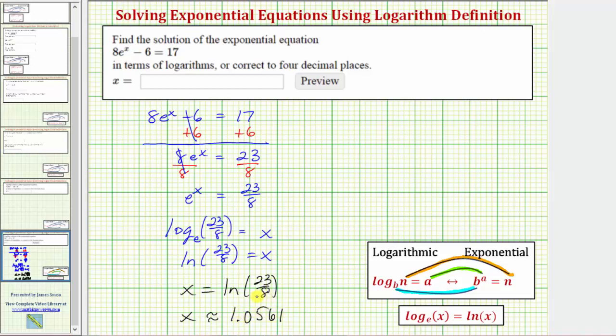Let's also check our solution by verifying this value of x satisfies the original equation. Using the original equation, we'll substitute ln(23/8) for x. So we'd have 8 times e raised to the power of ln(23/8) minus 6 equals 17.